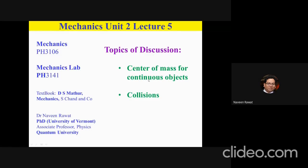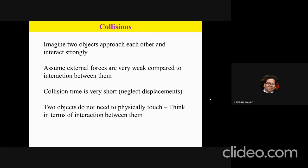Today we are going to look at collisions between different particles and the mathematical formulation of collisions as well. We want to imagine just two objects, and let's say these two objects are approaching each other. You have object one and object two and they can approach each other. They don't necessarily have to touch each other, but what we are saying is that these two objects will interact with each other. The reason for interaction is something we are not concerned with right now.